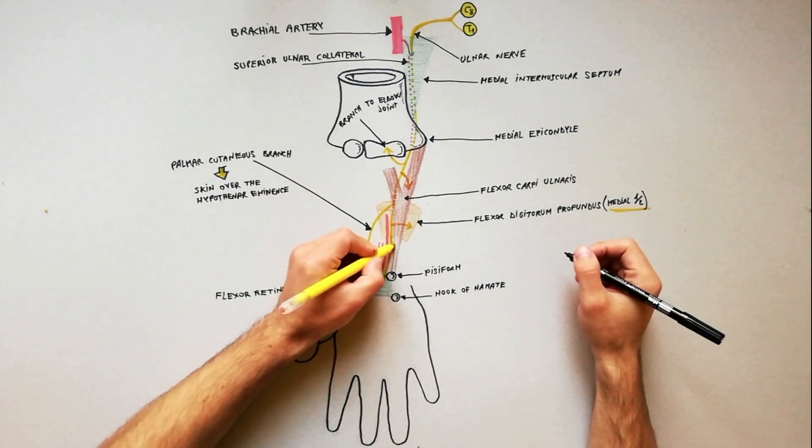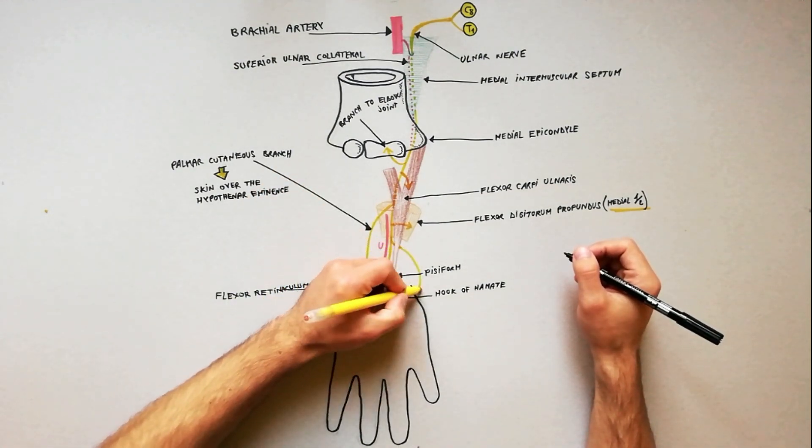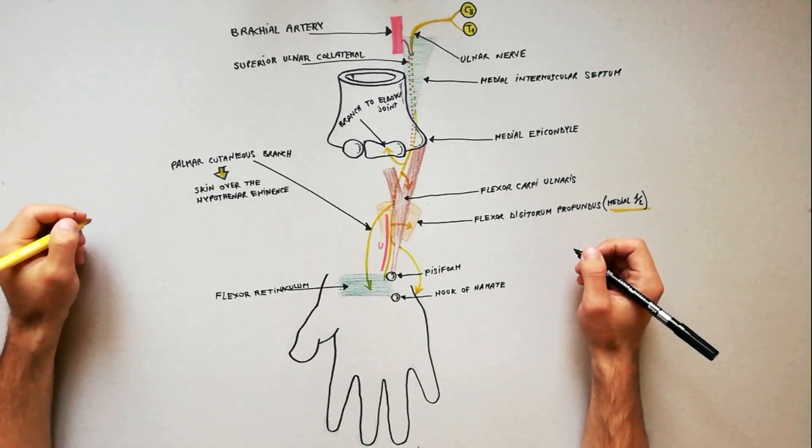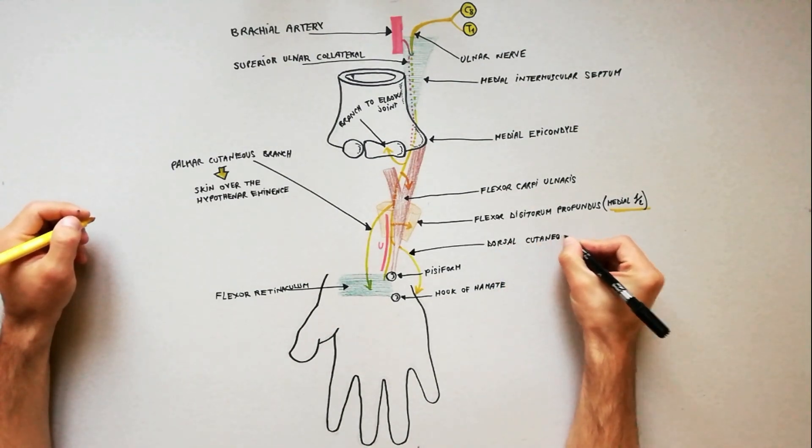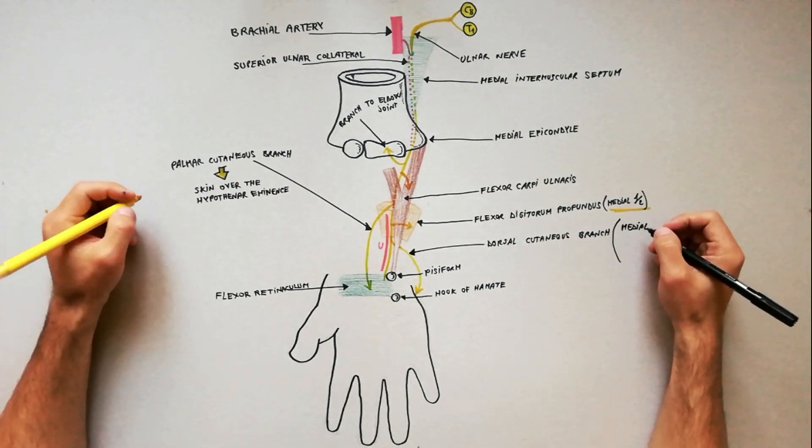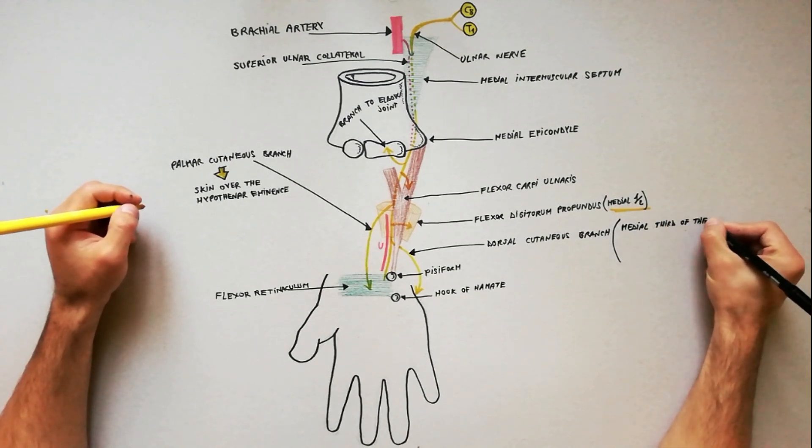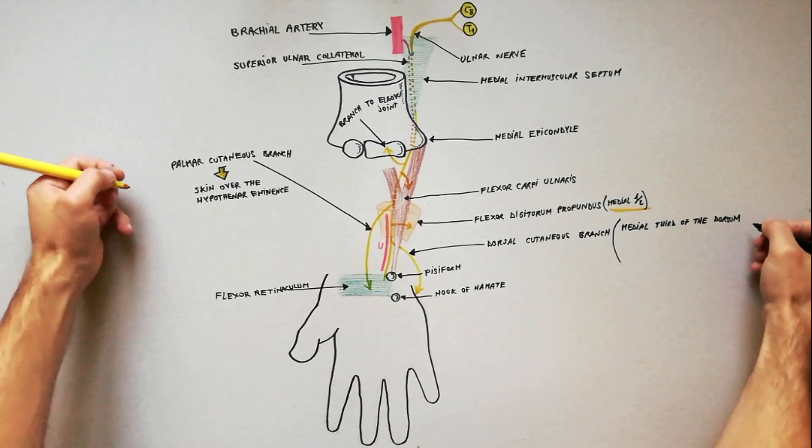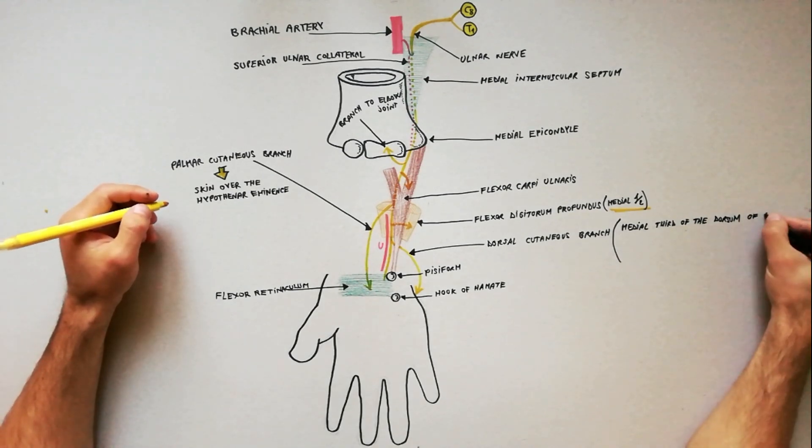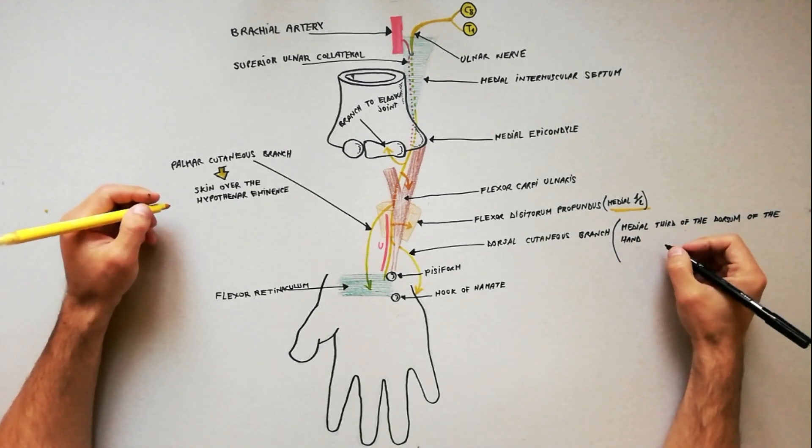In the distal forearm, about 5 cm proximal to the wrist, it gives off dorsal cutaneous branch which provides sensory innervation to the skin over the medial third of the dorsum of the hand and medial one and a half fingers.